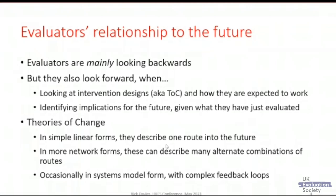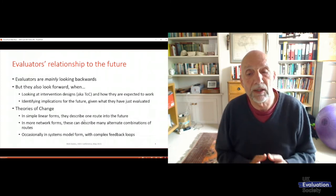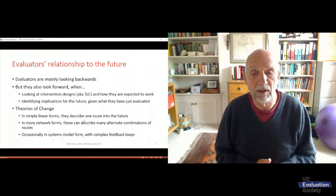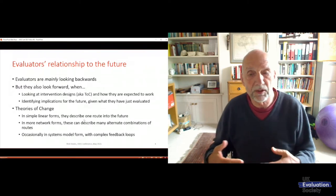Theories of change are theories about the future and vary in sophistication. We have very simple linear theories where inputs lead to activities, outputs, outcomes, and impacts. Or we have network forms with multiple intersecting pathways leading to different outcomes. Occasionally we get more sophisticated systems models with complex feedback loops where we can view the future by running simulations, though these are relatively uncommon.